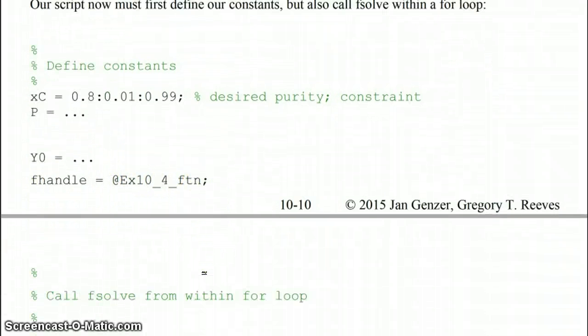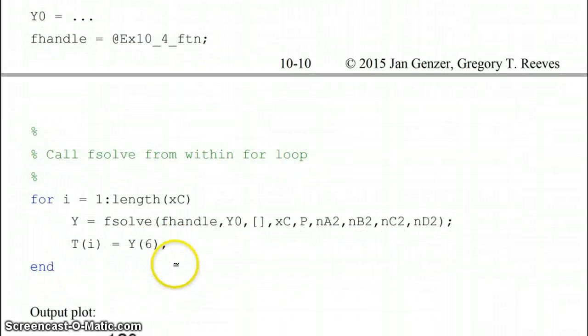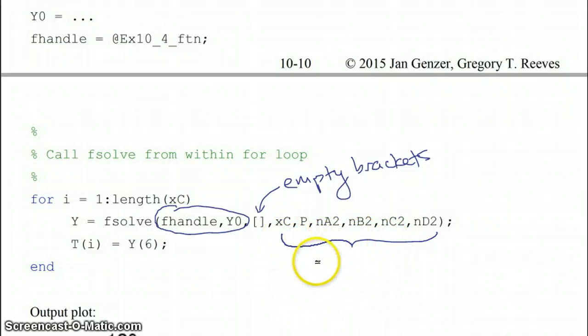Then we have to call fsolve from within a for loop. We'll write a for loop for i equals 1 to the length of our purity vector, or our liquid mole fraction of C vector. We're going to call on fsolve similar to the way we have before, where the first two arguments are our function handle and our initial guess. We're going to have a placeholder argument with empty brackets, as we did with fzero. And then at the end here, we're going to have our extra constants or parameters in the same order as they're found in the function.